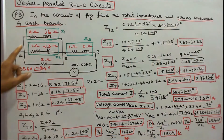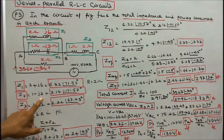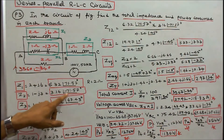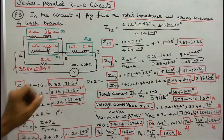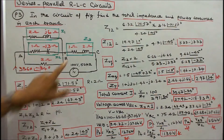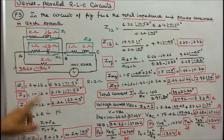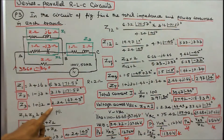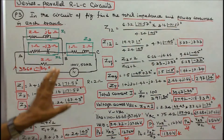Z2 = 1 − j3 in rectangular form; in polar form, 3.16∠−71.57°. Z3 = 1 + j2 in rectangular form; in polar form, 2.24∠63.43°.